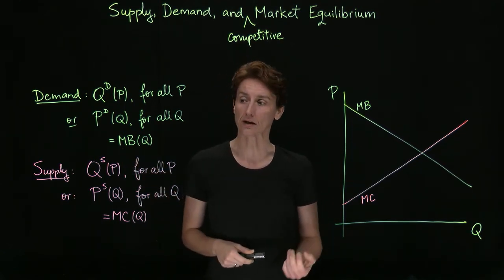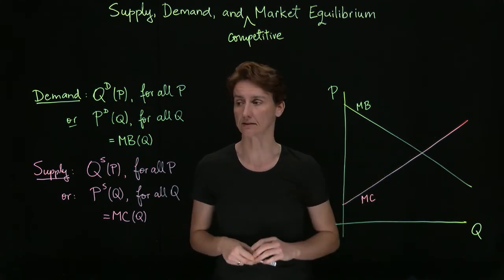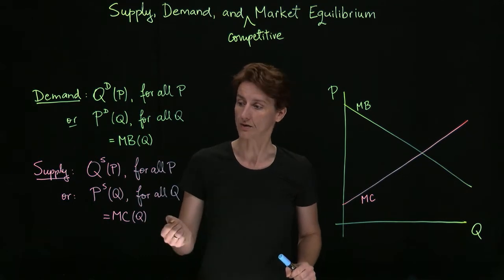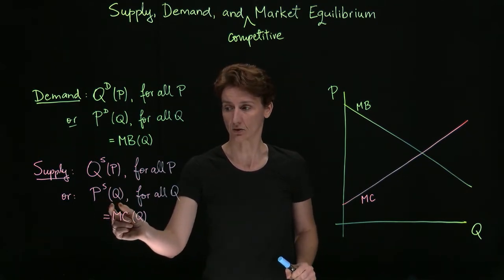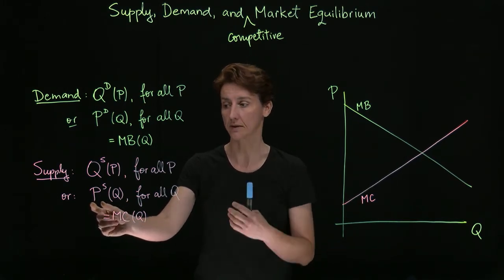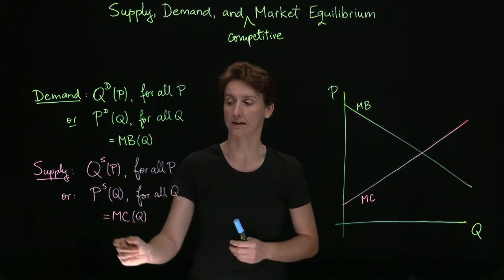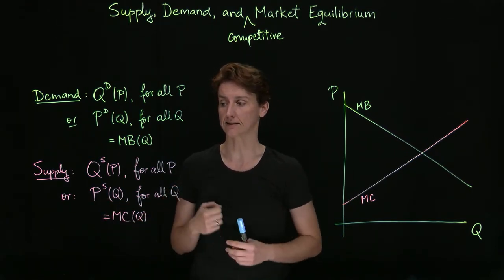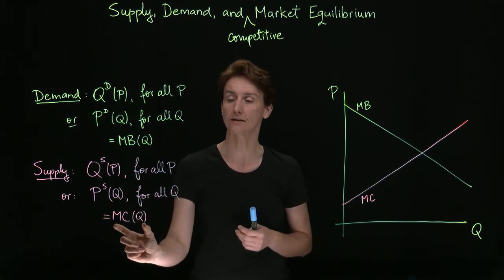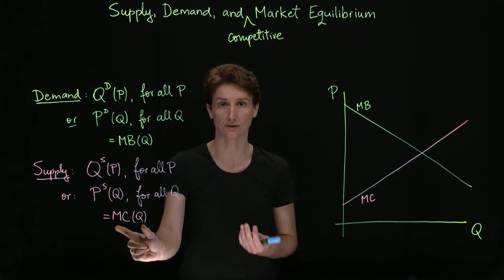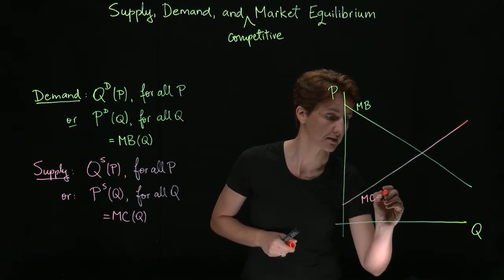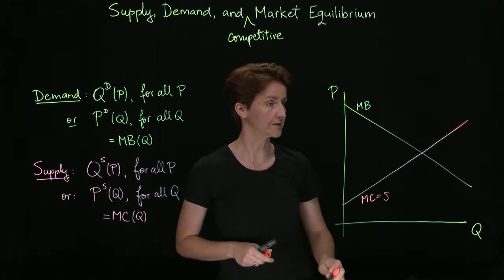Supply works the same way. We can see the supply curve as either giving us the quantity supplied at different prices, or as giving us, at all the different quantities, the price that the seller would demand in order to sell one more unit. And again, if it's a competitive market, then that price demanded by the seller — the seller's reservation price — will equal the marginal cost of producing that unit. So marginal cost will give us supply, and marginal benefit will give us demand.